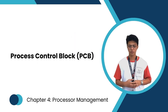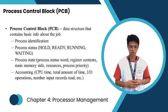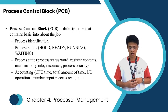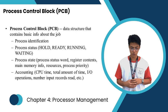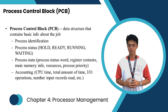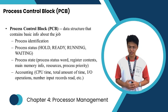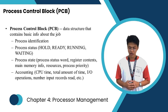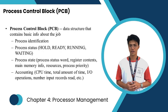The Process Control Block (PCB) is a data structure that contains basic information about the job, including process identification, process status, process state, and accounting. Process identification means each process is assigned a unique identifier to distinguish it from other processes, allowing the OS to keep track of and manage individual processes.